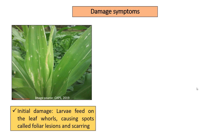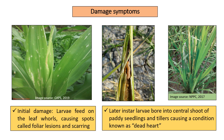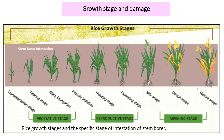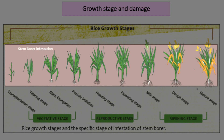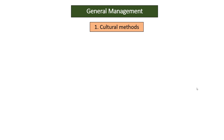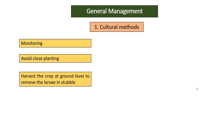Damage Symptoms: During the initial stages of the larvae, it feeds on the leaf, causing spots called foliar lesions and scarring. Later, instar larvae bore into central shoots of paddy seedlings and tillers, causing a condition known as dead heart. In matured plants, the whole panicle becomes whitish and unfilled, known as whitehead. Stem borers cause damage basically throughout the crop's life cycle, including vegetative stage, reproductive stage, and ripening stage.